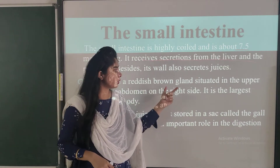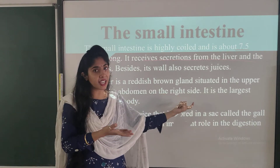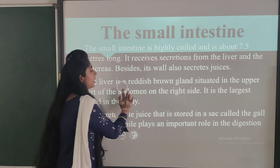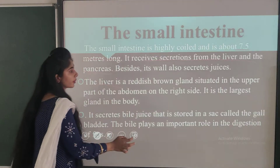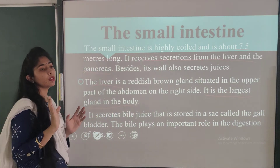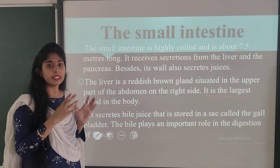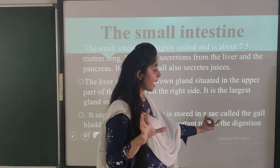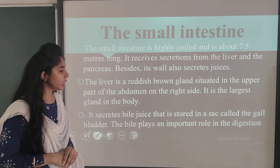The liver is a reddish-brown gland situated in the upper part of the abdomen on the right side, and it is the largest gland in the body. Its secretion, bile, is stored in a small sac called the gallbladder. Bile plays an important role in digestion.